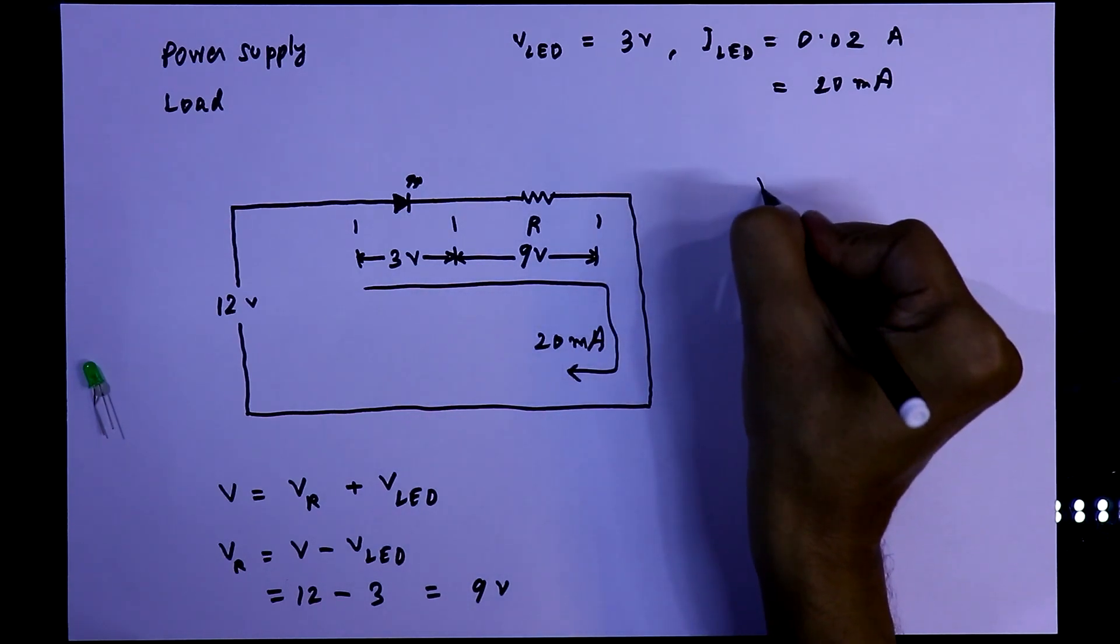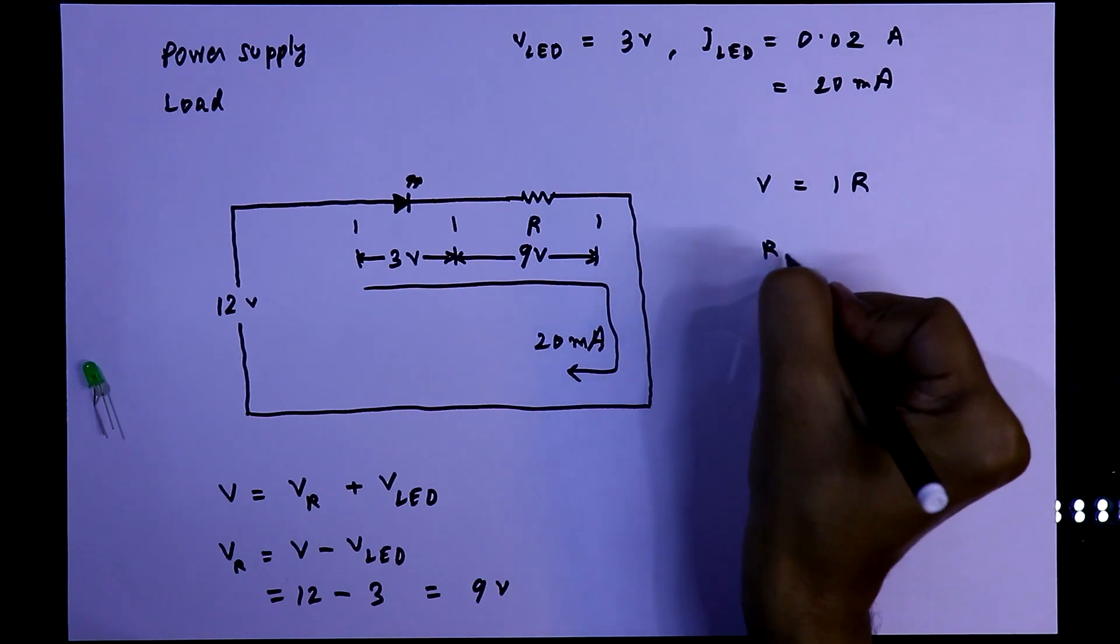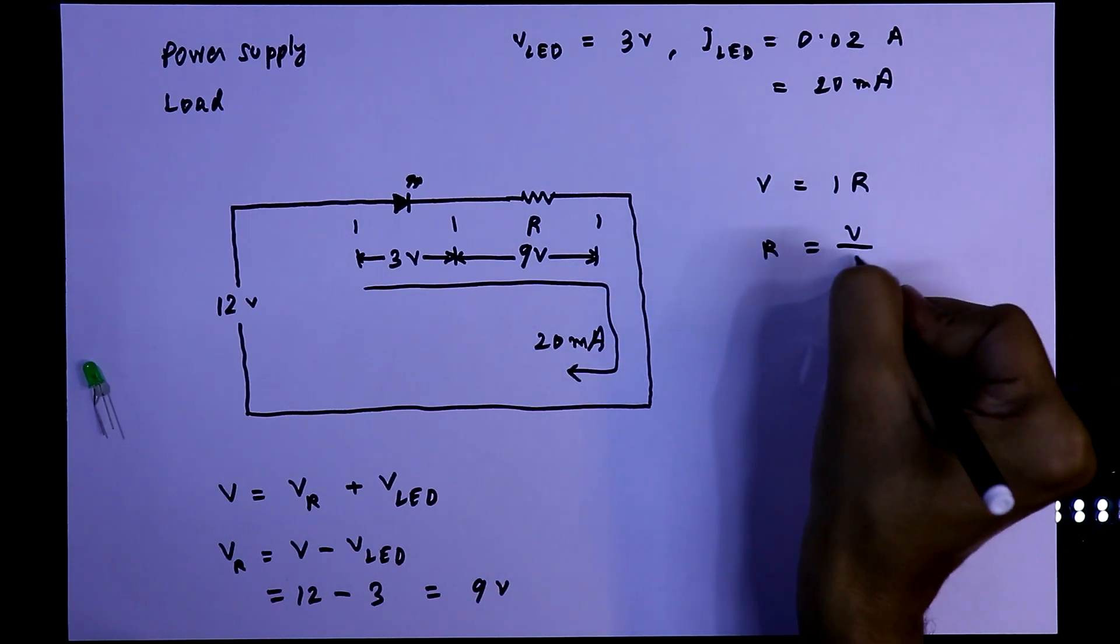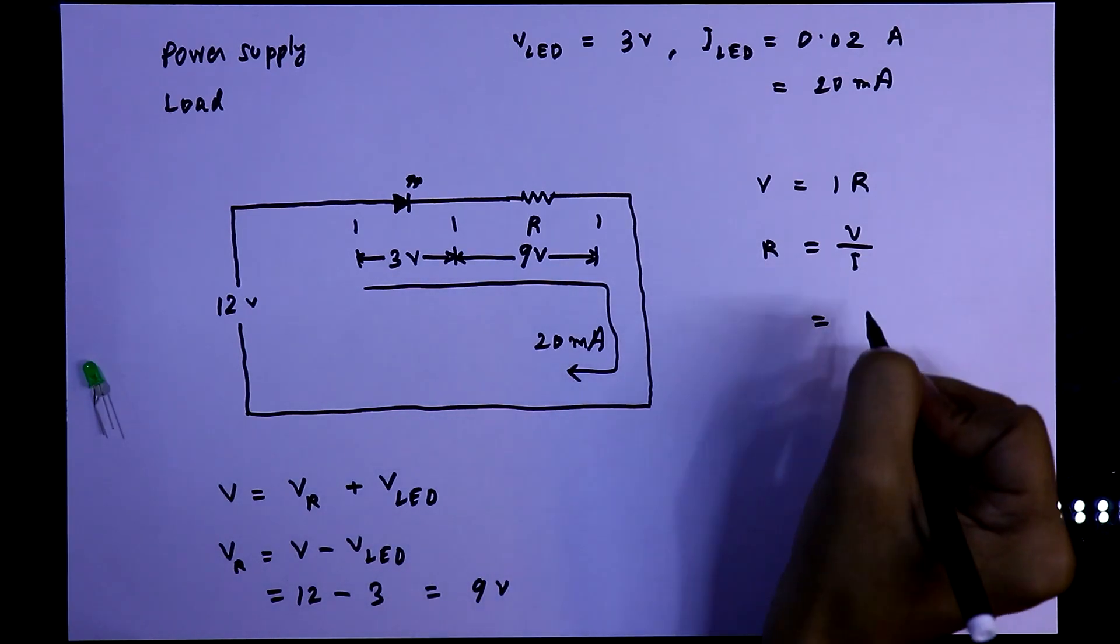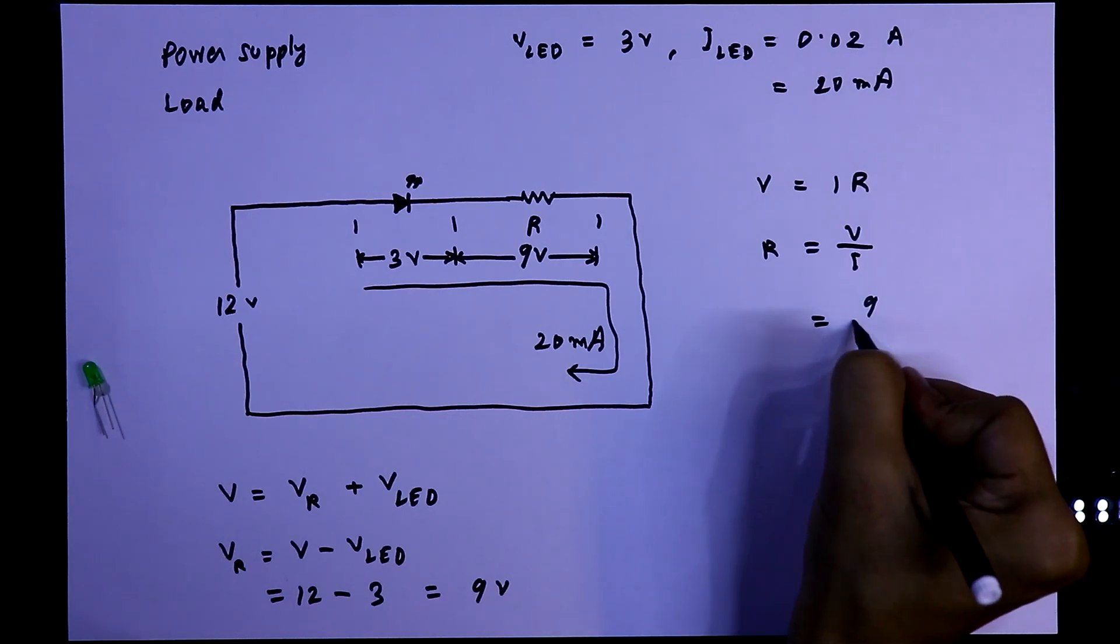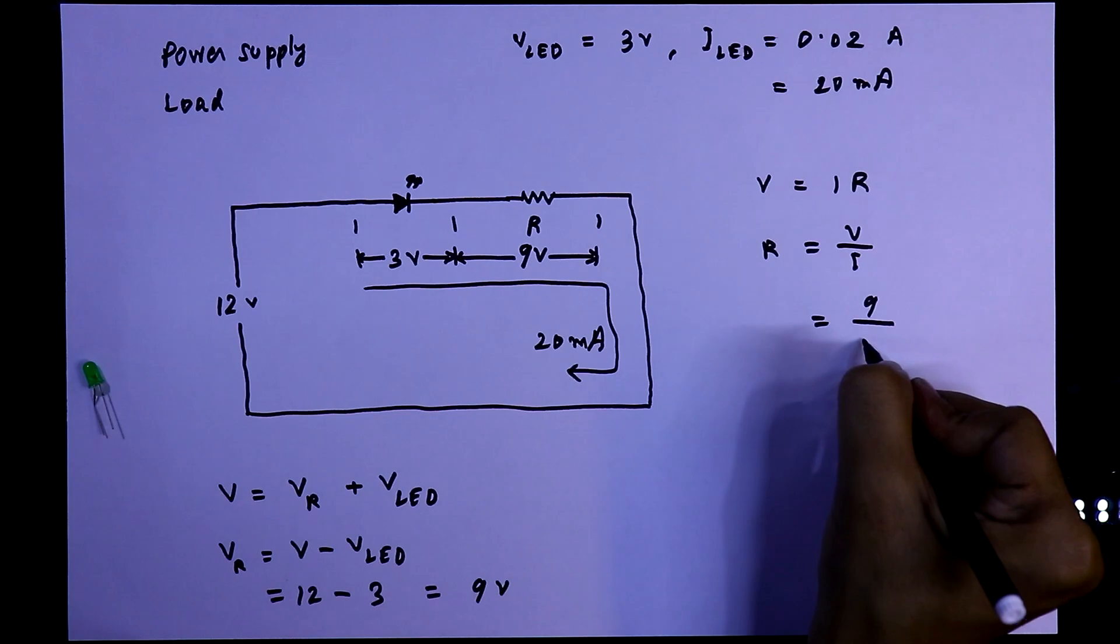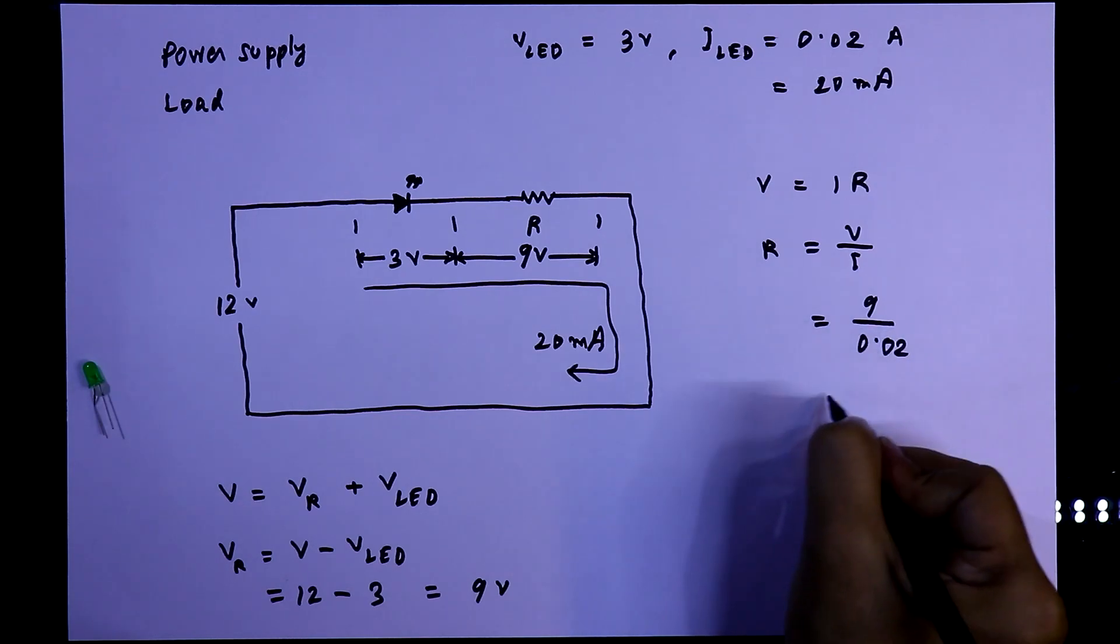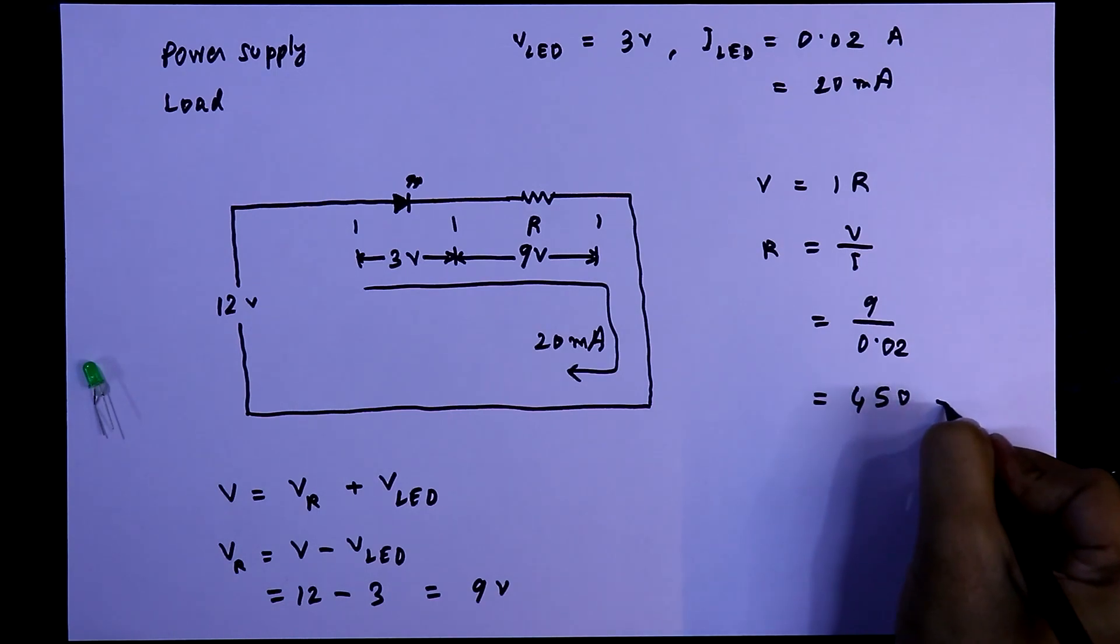According to Ohm's law, V equals IR. So R equals V by I. V is 9V as we are going to drop 9V and I is 20mA, which is 0.02A. It is 450 ohms.